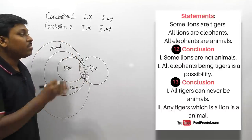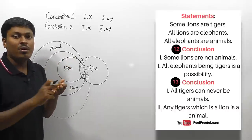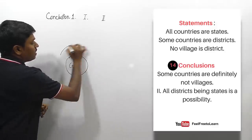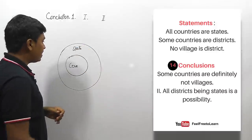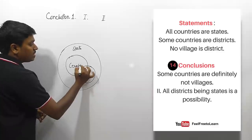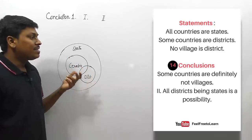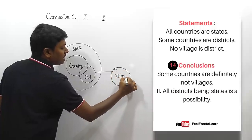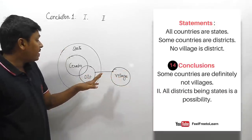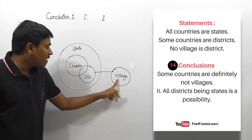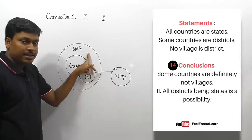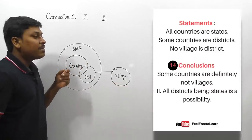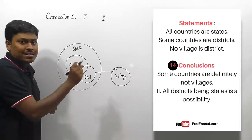This is one of the most important syllogism questions covering concepts: each, every, some not, and any. Next question. Statements: 'all countries are states,' 'some countries are districts,' and 'no village is district.' After drawing: no possible connection between village and district, but possible connections between village and state and village and country. Conclusion one: 'some countries are definitely not village' — 'some not' concept, read first two words: 'some countries.' This region is definitely not village because there is no possible connection between village and district.